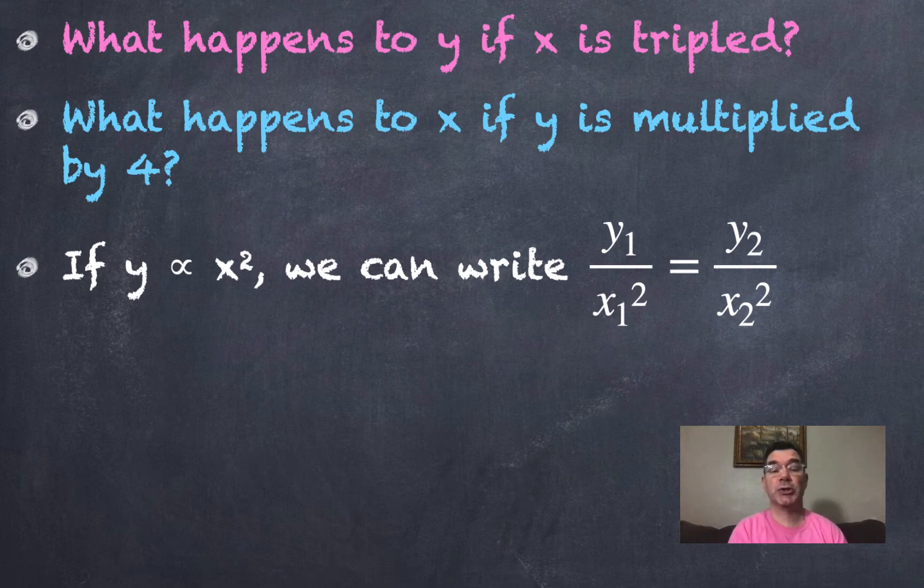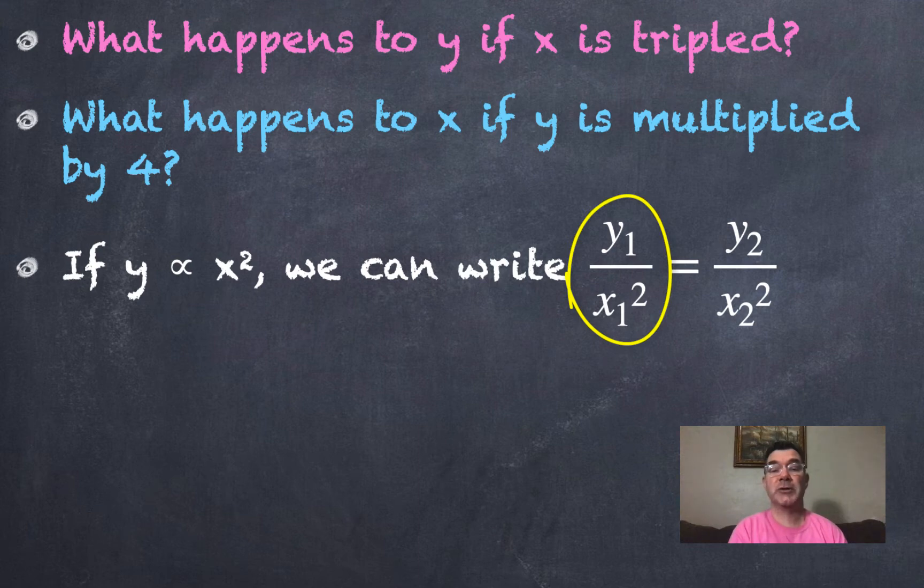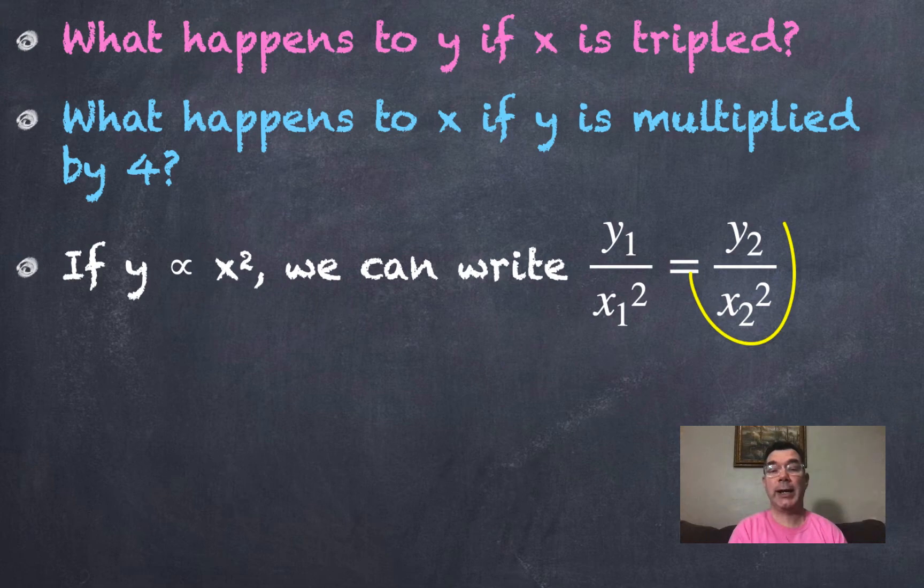So if y is proportional to x squared, then we can write that the first y over the first x squared is equal to the second y over the second x squared.